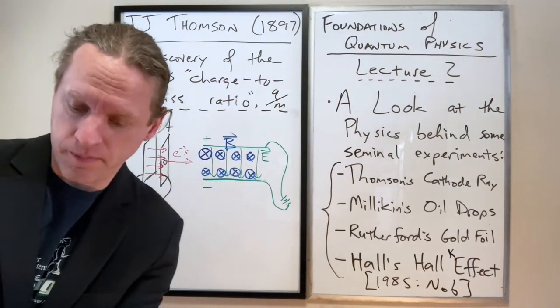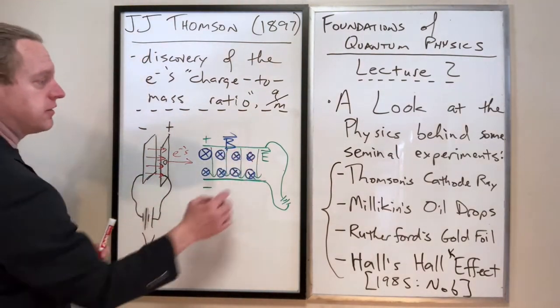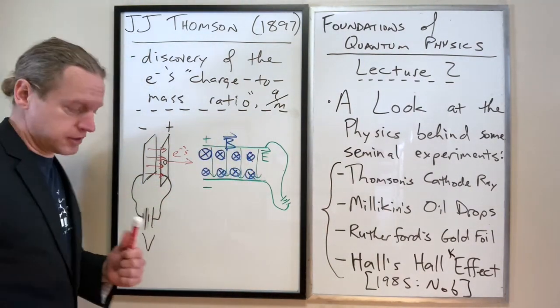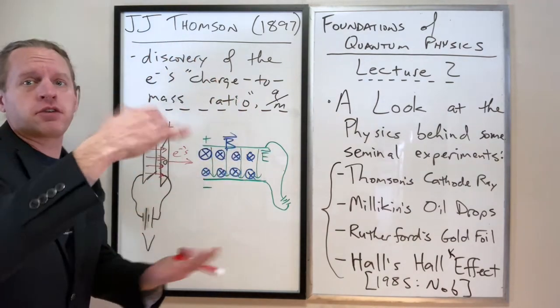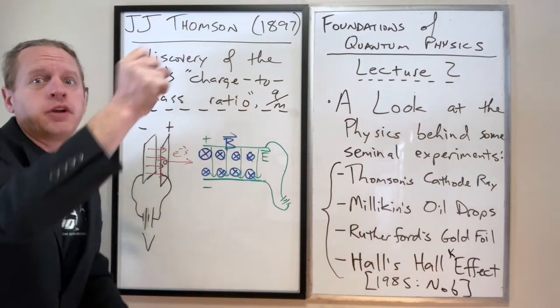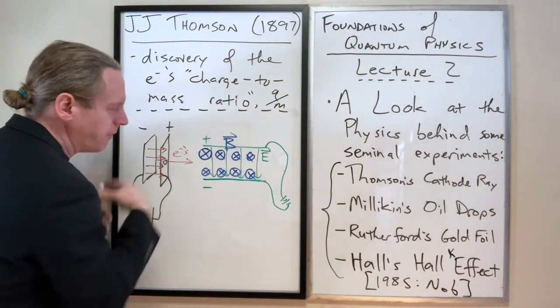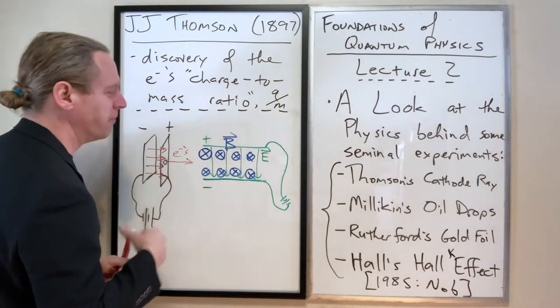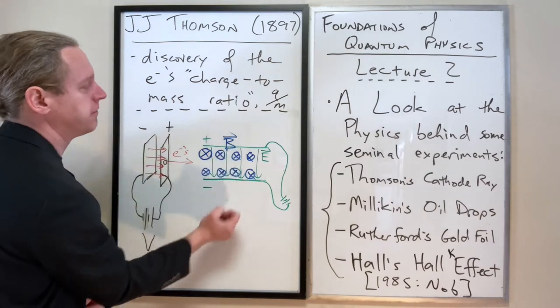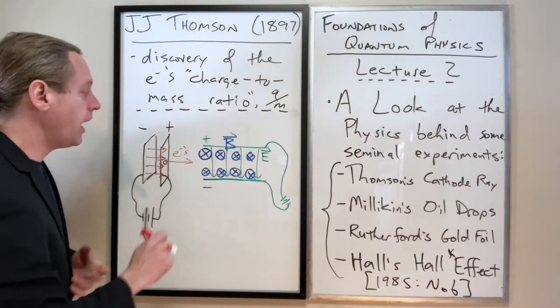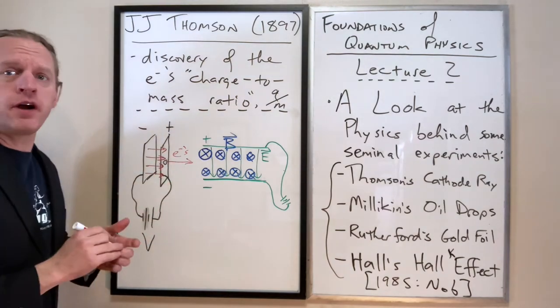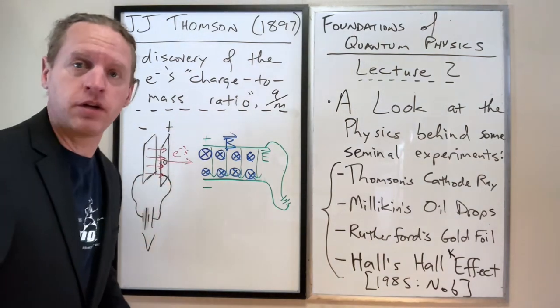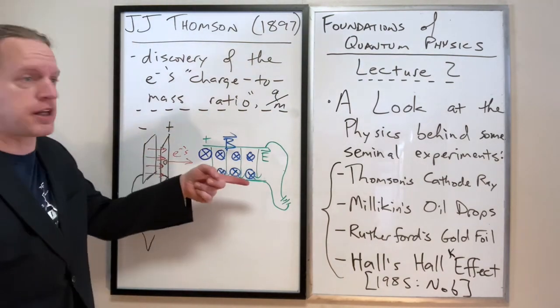So what's going to happen here? If we balance the E and the B fields, we have a way of varying the magnetic field. For example, we have some external magnet. If you bring it closer or further, you can change the strength of it. You could vary the B field, vary the E field.